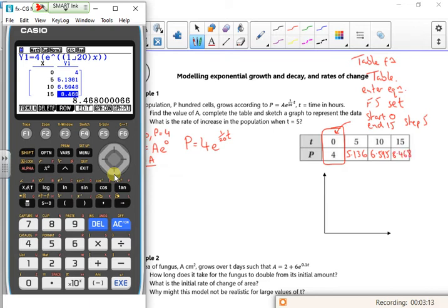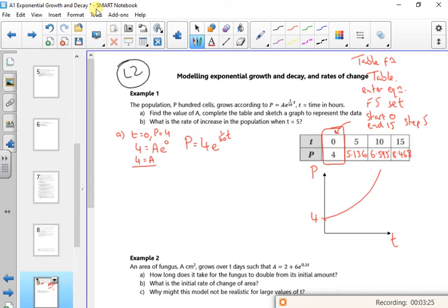Right. So you can kind of see, it's an exponential growth. I'm not going to plot it, I'm just going to do a sketch. So that'll be 4, that'll be P, and that'll be t. Right, I'll leave it.